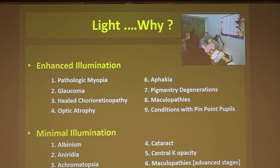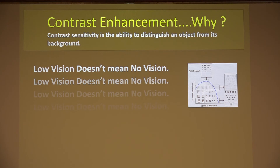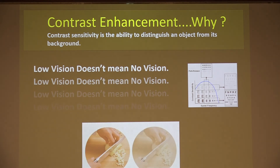We can help patients suffering from pathological myopia and glaucoma by increasing illumination. On the opposite side, patients suffering from albinism, aniridia, and achromatopsia use their residual vision in low illumination. Another aspect of light and image perception is contrast sensitivity. Contrast is more important to a visually impaired person than to a sighted person — spatial orientation and daily living skills are heavily dependent on contrast. Pictures at the bottom show how everyday tasks look to a patient with AMD or glaucoma where there is a loss of contrast.